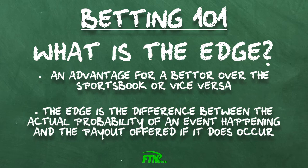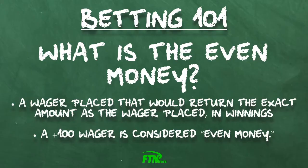Even money is a wager placed that will return the exact amount as the wager in winnings. A plus 100 wager is considered even money — you bet $100 to profit, and you win $100 if you're correct.